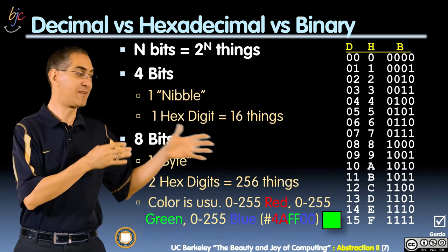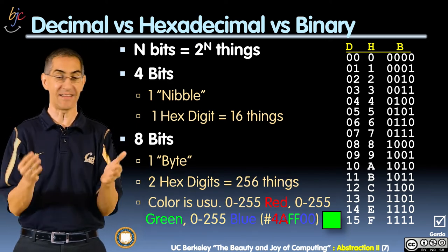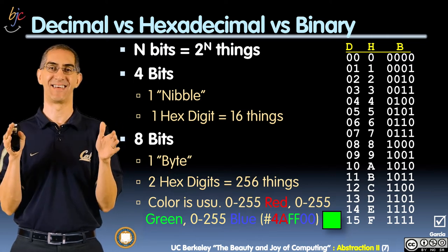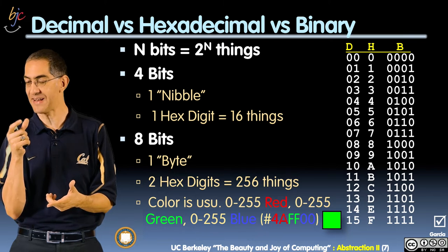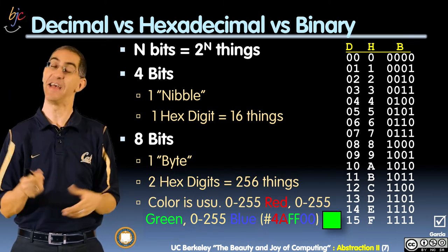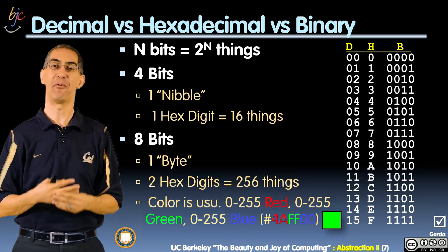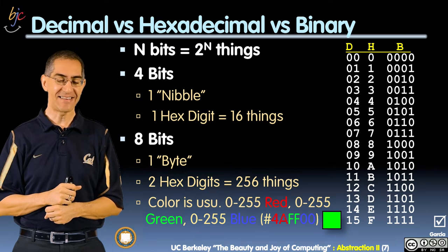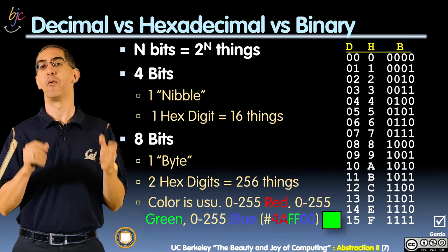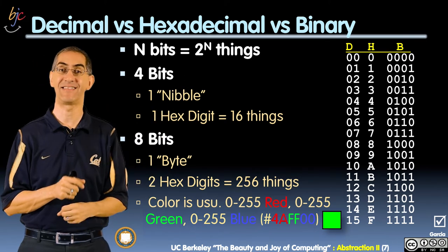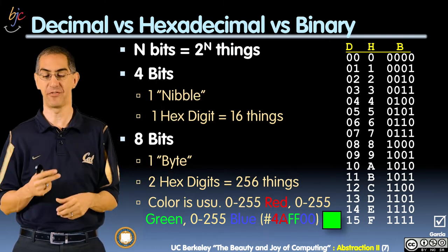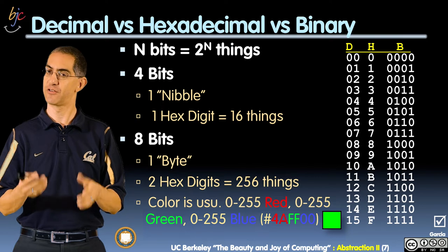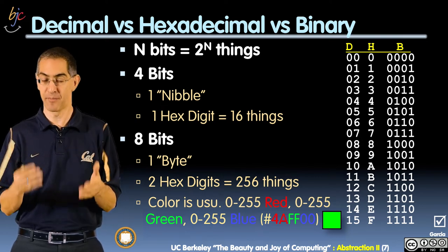With four bits you have sixteen possible options. In computer science, we often take eight bits together — and we call those eight bits a byte, B-Y-T-E. Four bits is half a byte, and that's called a nibble. One hex digit is four bits with sixteen possible options, and two hex digits is a total of eight bits. Two to the eight is 256, so with a byte I can represent 256 different things, usually numbered from zero to 255.